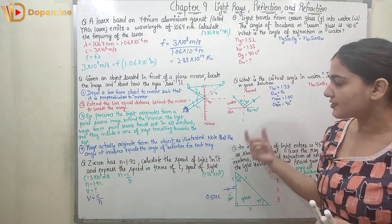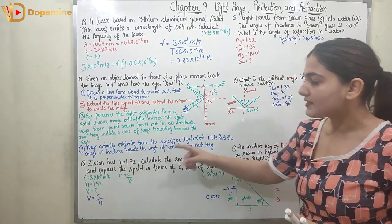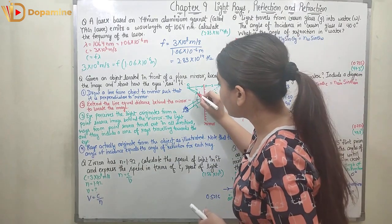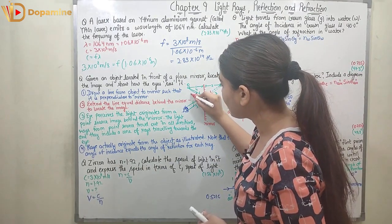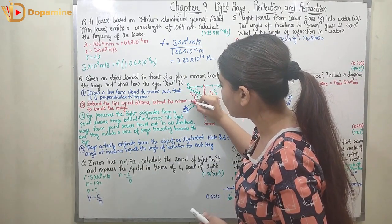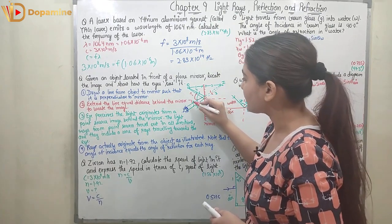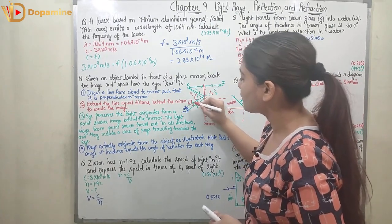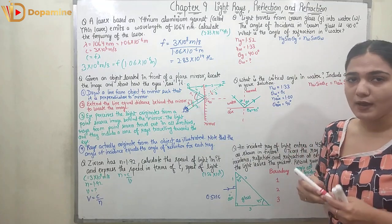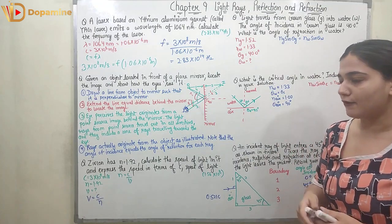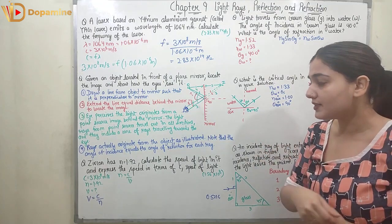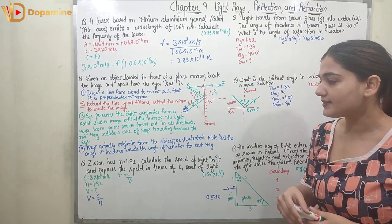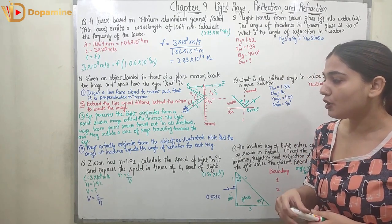The rays actually originate from the object. Note that the angle of incidence equals the angle of reflection. For any ray, angle i equals angle r. I hope you understood this.